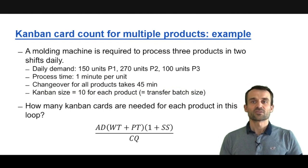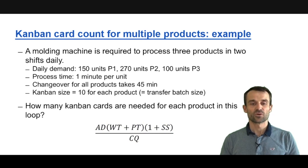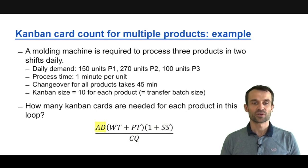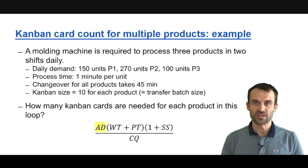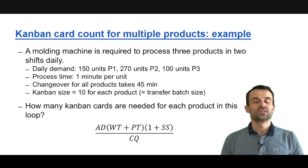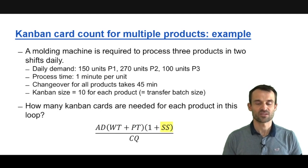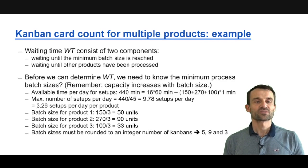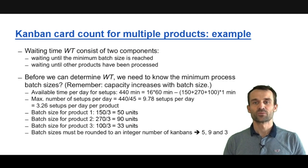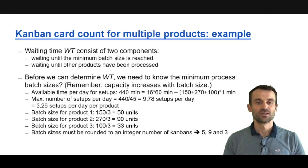Now let's look at the formula for the Kanban card count. We need the daily demand rate in terms of number of container quantities, plus waiting time and process time, and then we inflate things with a safety factor. Process time is straightforward — that's one minute per unit, or 10 minutes per container quantity. But waiting time is more complicated.